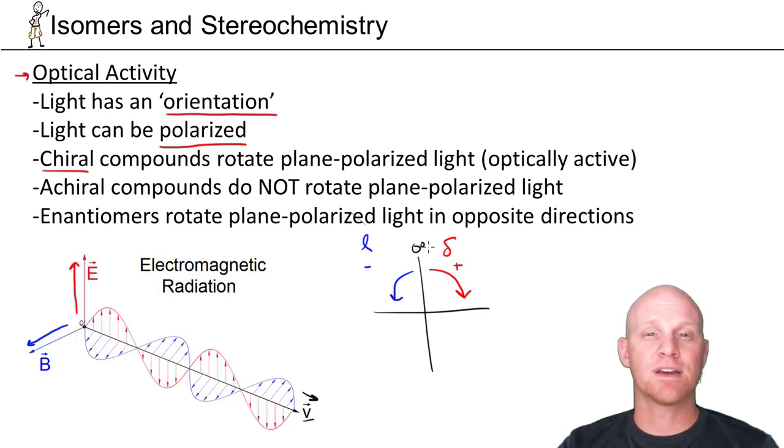Whereas you can distinguish R and S from each other based on the structure, you actually have no idea which one is rotating light to the right and which one is rotating light to the left until you actually stick it in a polarimeter and measure it. There's no connection between R and S and D and L or plus and minus.